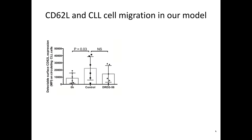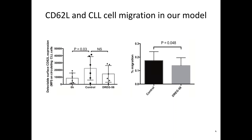In our macro system, we take CLL cells and see this big increase in CD62L expression. When we added DREG to our macro system, we saw a reduction in CD62L expression, though this wasn't statistically significant at N equals 6. Even though the reduction wasn't significant, at the 24-hour time point we showed a reduction in the percentage of cells that migrated in our model. This corroborates the BioFlux data — the inability of cells to interact with endothelium is probably modulating their ability to migrate.